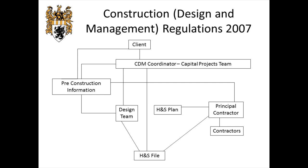The other two bits of paper are the health and safety plan — we require the principal contractor to make a plan on how he's going to manage health and safety through the project, which he did quite well, it's about that thick. And then finally we need a health and safety file, which records health and safety information that informs future construction work. So in the future, when you come to clean your windows in the new building or do any construction work on it, that's where you go to find any health and safety information.